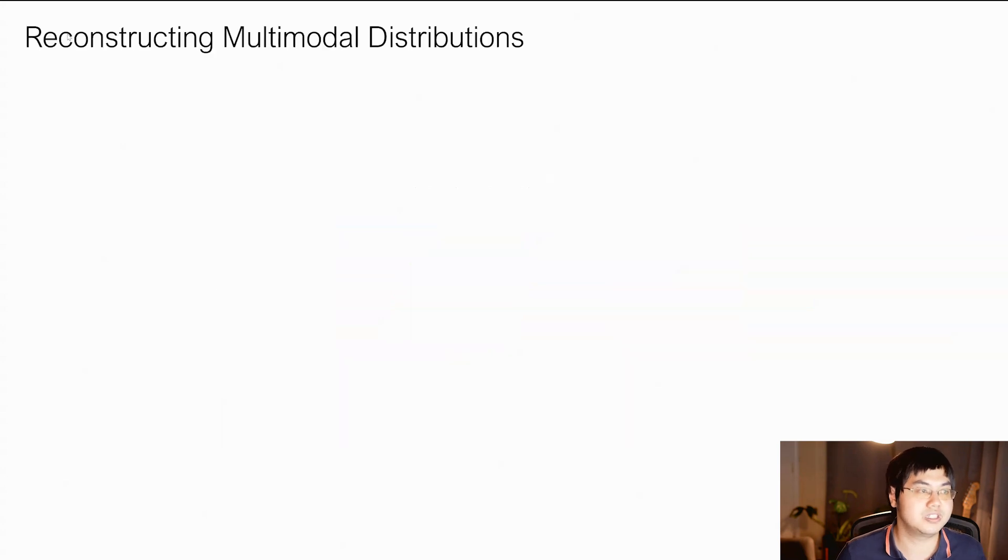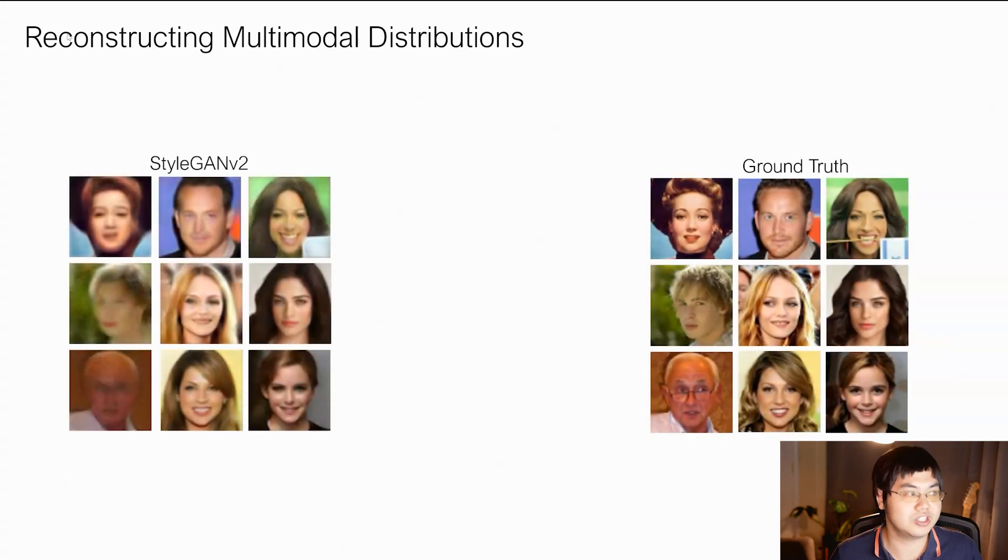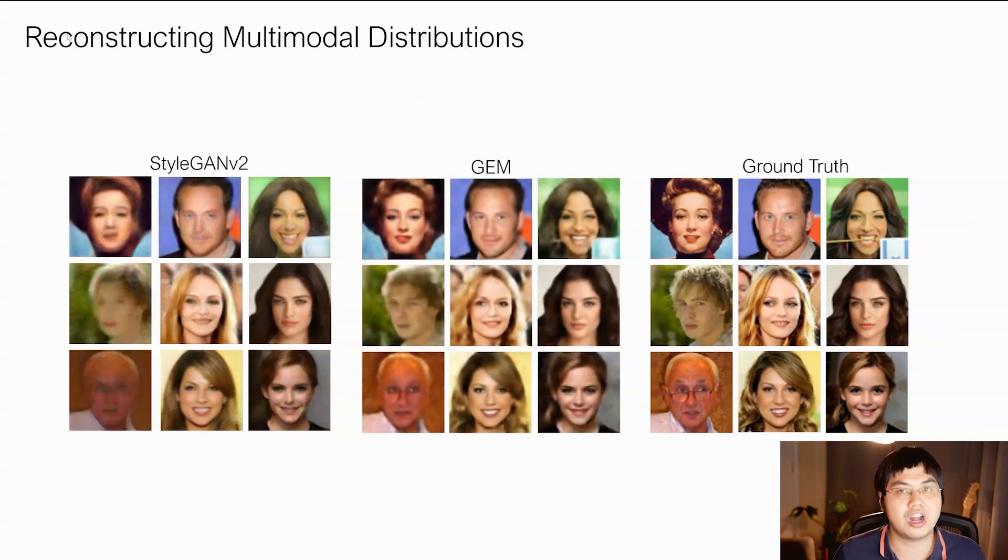First, data coverage. We take test samples and fit our model to them. First, we consider some test images and consider StyleGAN. We find that StyleGAN is able to reconstruct a variety of the images, but is unable to construct some of them that are out of distribution. In contrast, our approach is able to reconstruct all of the samples.